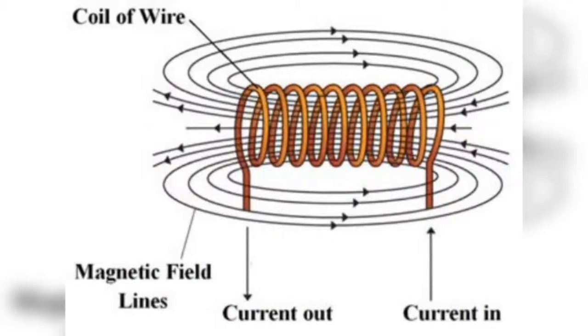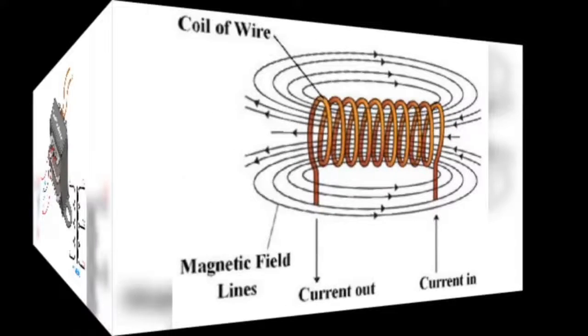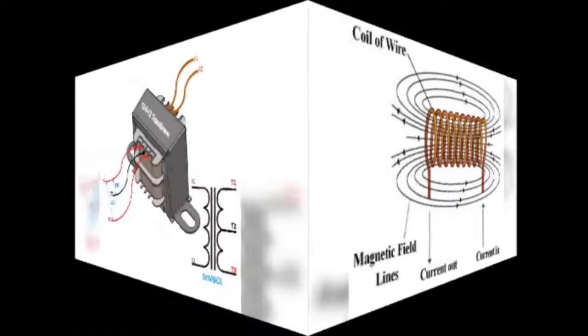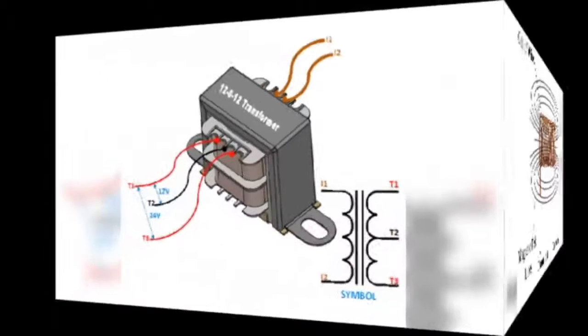This concept of electricity producing a magnetic field, and then that magnetic field producing an induced voltage in a particular system, is known as mutual inductance.